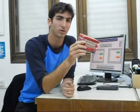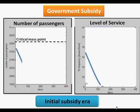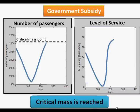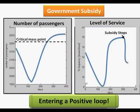Let's see why it is so important. If the government subsidizes bus lines which enter a negative loop by improving their level of service, eventually more passengers will use the bus line. The subsidy must continue until this critical mass point of passengers using the line is reached, and only then can the government stop the subsidy and rest assured that the bus line will enter a positive loop. Stopping before the critical mass point is meaningless.